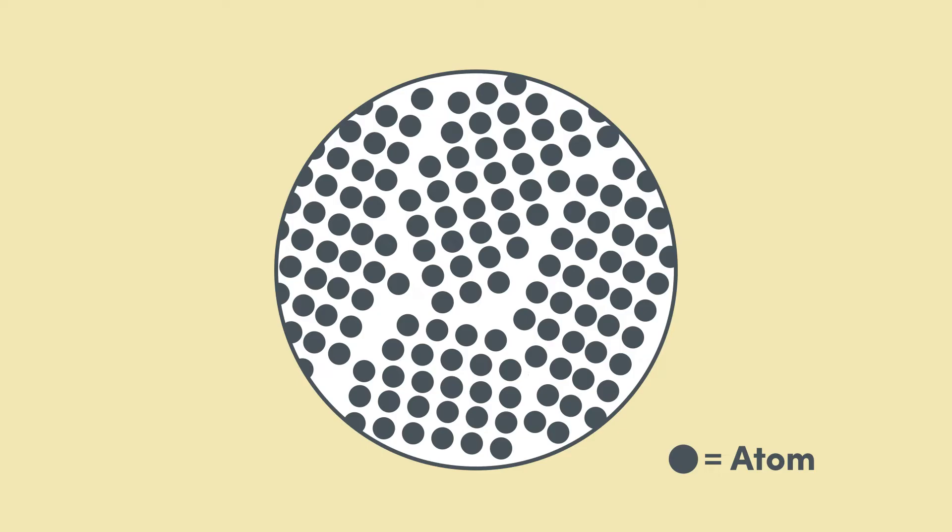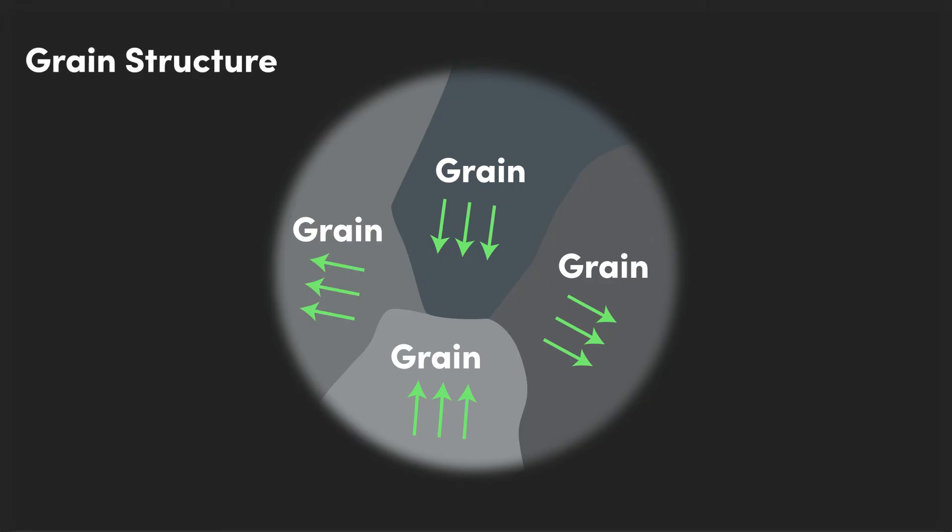The regions which have the same direction or orientation of their crystals are called grains. Under a light microscope we won't see the individual atoms but we will be able to see individual grains. We call this the grain structure, and where two or more grains meet this is called a grain boundary.